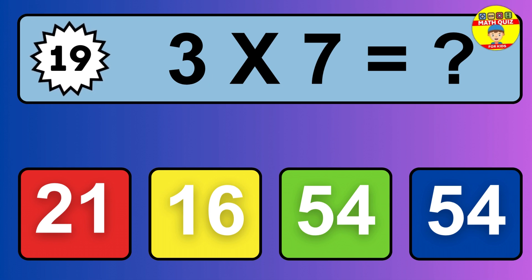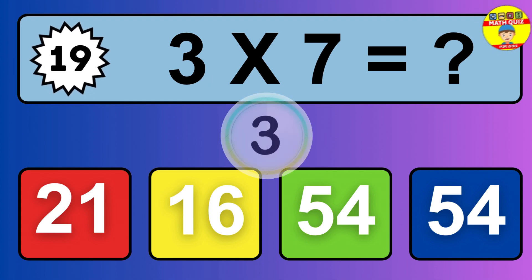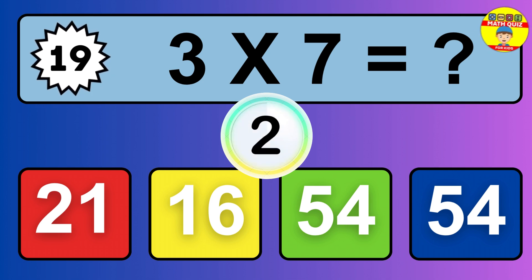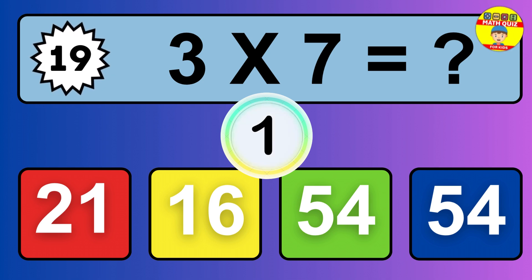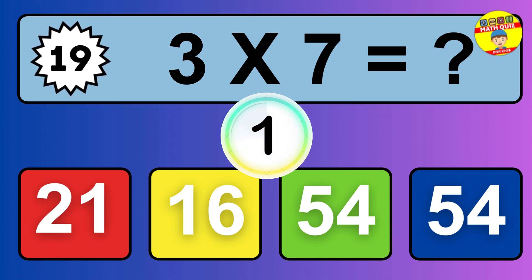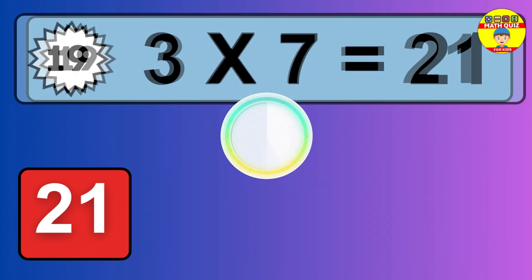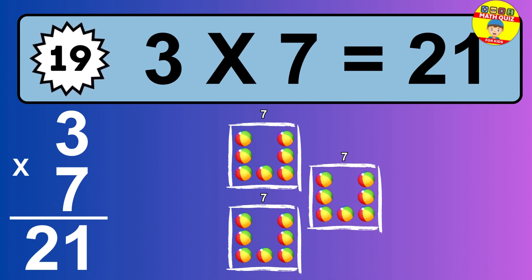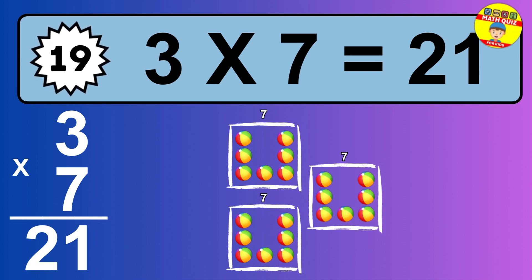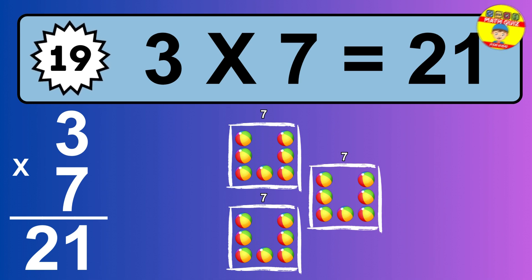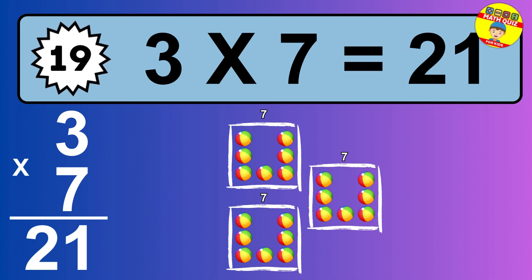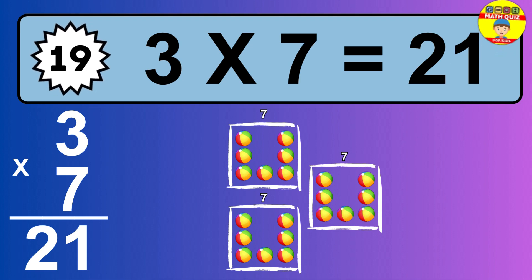Question 19. 3 times 7 equals what? The answer is 3 times 7 is 21. To calculate, we have 3 groups with 7 balls each one. So how many balls do we have? 21 balls.